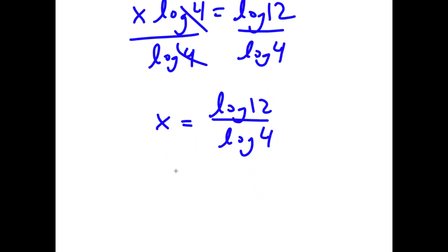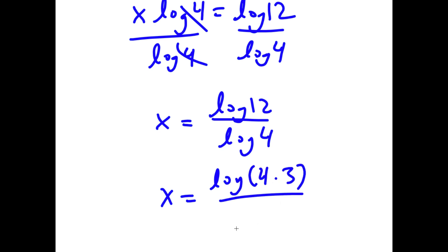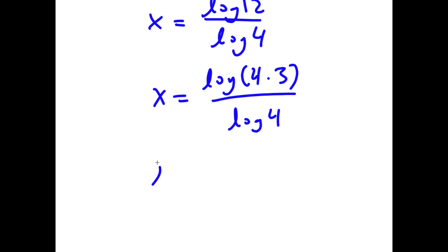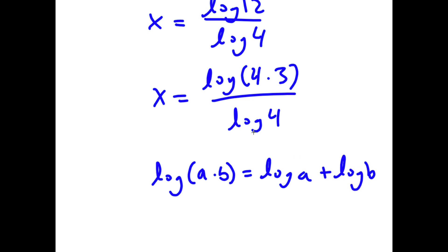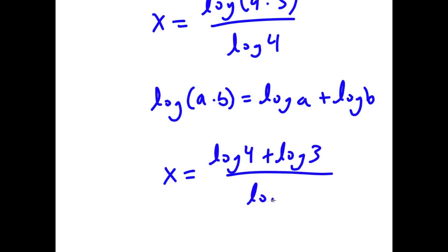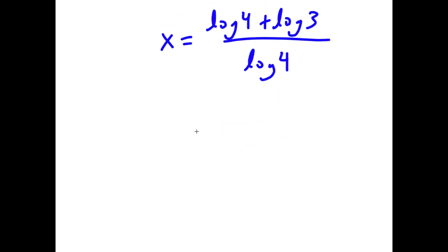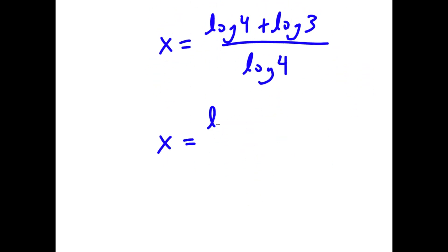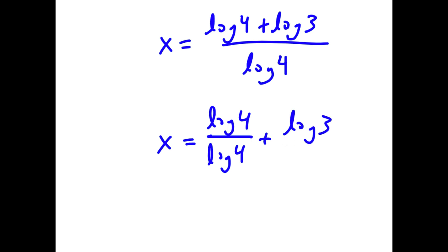Now, I can rewrite log 12 as log of 4 times 3. So I have log of 4 times 3 over log of 4. And if I have something in the form log of a times b, this is equal to log a plus log b. So log 4 times 3 is going to equal log 4 plus log 3. And I have this over log 4. So now this is the same thing as log 4 over log 4 plus log 3 over log 4.